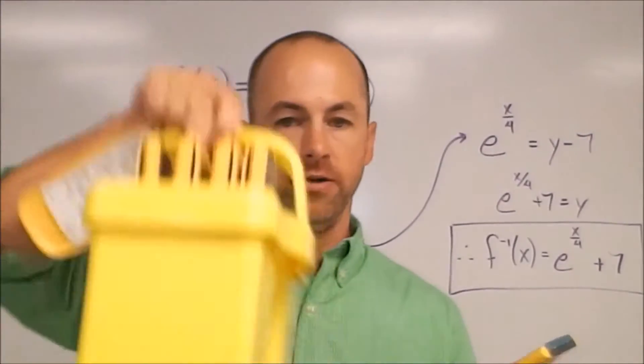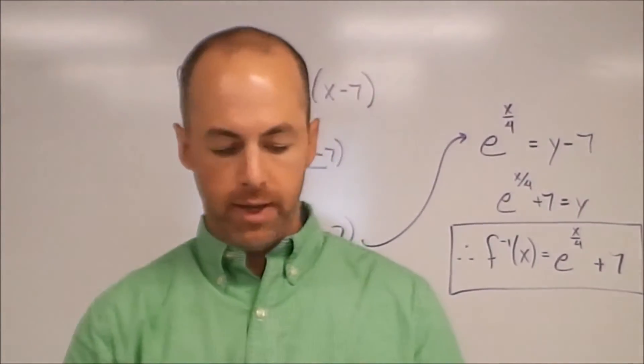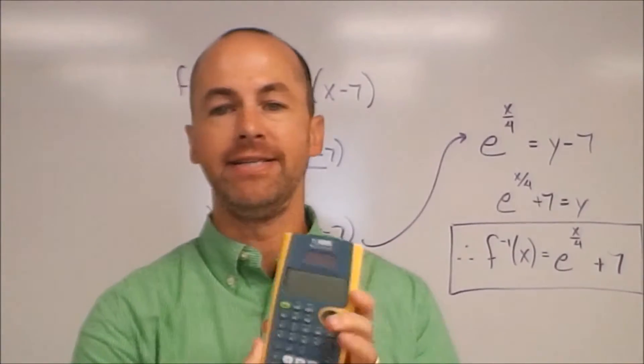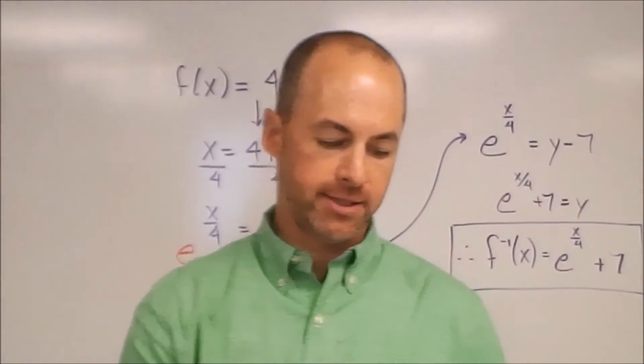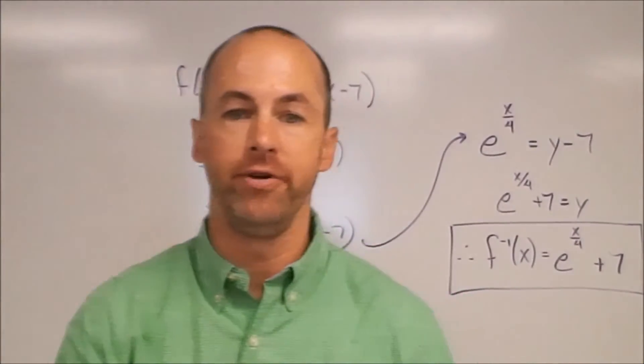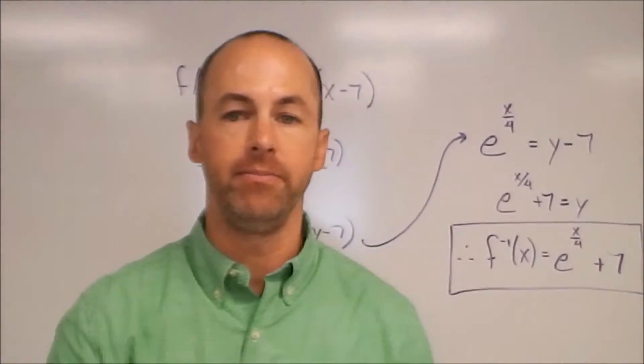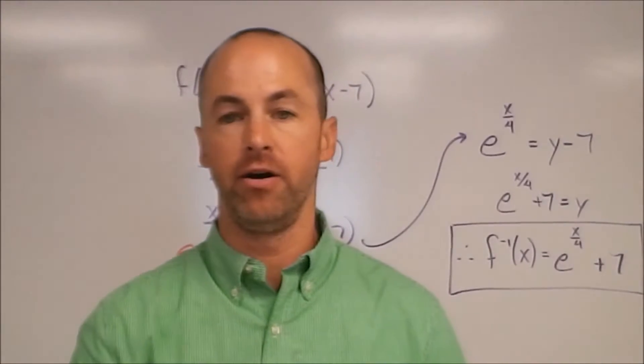I do have a classroom set of these. There are 10 of them. And the scientific calculator that I think is the easiest to use is this one. It's the TI-30XS. It's not that expensive if you want to buy one of your own. They're between 10 and 15 bucks on Amazon. I don't know how much they are at Walmart.